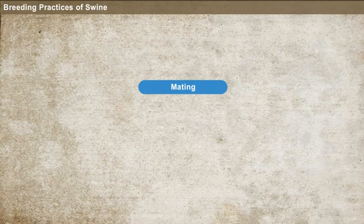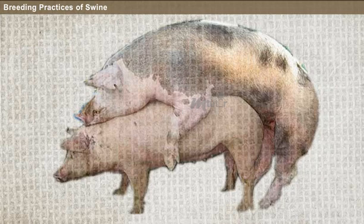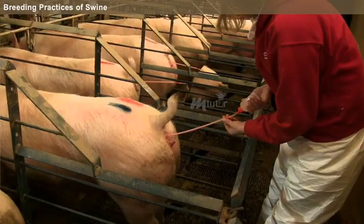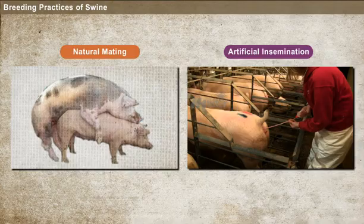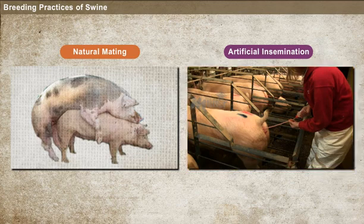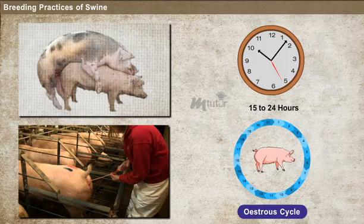Mating. There are two types of mating: natural mating and artificial insemination. Natural mating normally involves a boar and a sow wherein the mating is observed. Artificial insemination can be done with fresh as well as well-preserved semen. During breeding, artificial insemination decreases the chances of injury for both sow and boar. The best time for mating or inseminating the sow is from 15 to 24 hours after the beginning of the estrus cycle.